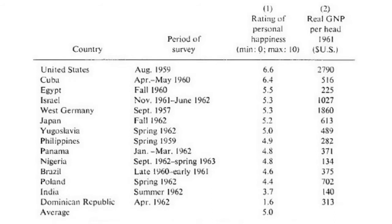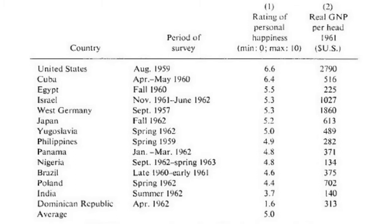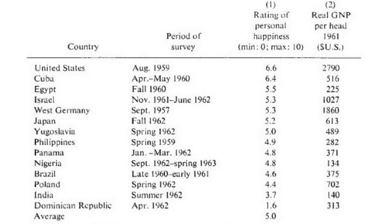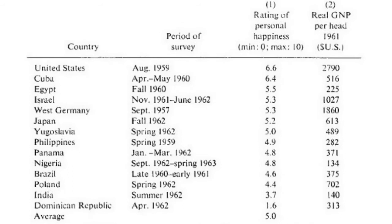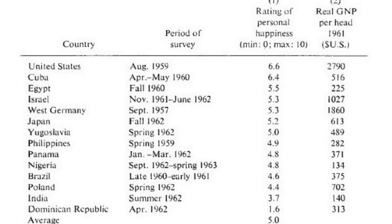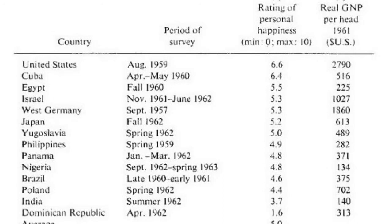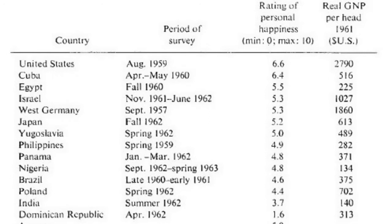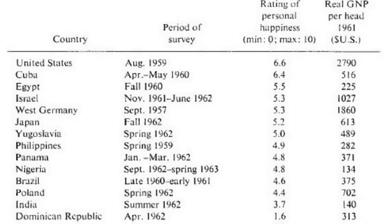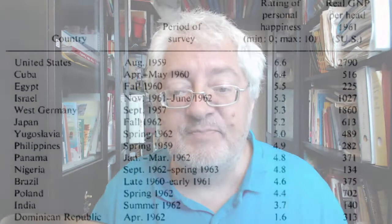This is sorted according to happiness. On the right side you can see that the richest country, the United States, also has a relatively high happiness. But then the next highest happiness is Cuba, which has approximately a sixth of the GNP per head of the United States. The third country in happiness is Egypt, which has less than a tenth of the GNP of the United States. Then come Israel and West Germany, with very high levels of income but relatively low happiness levels.